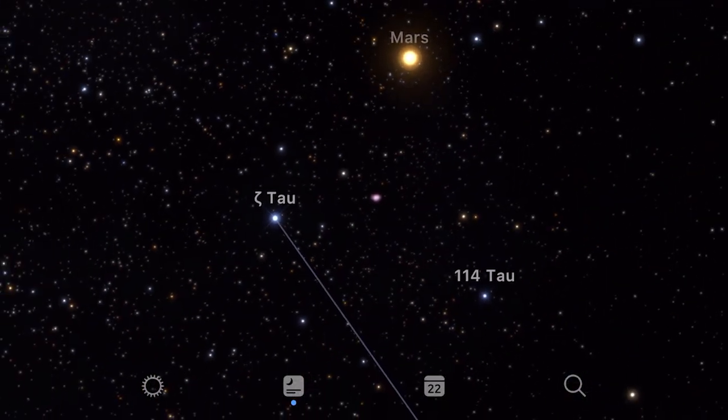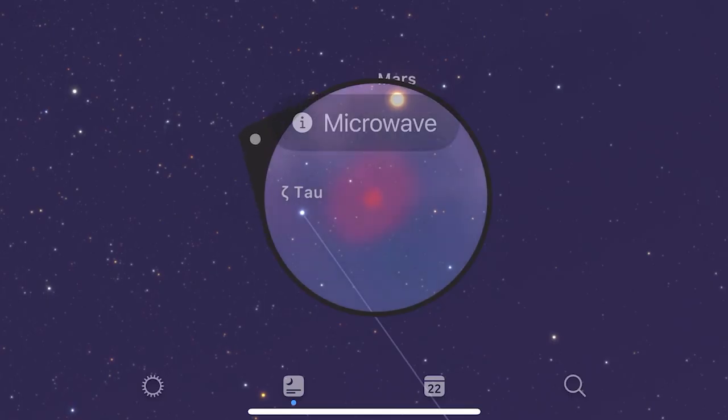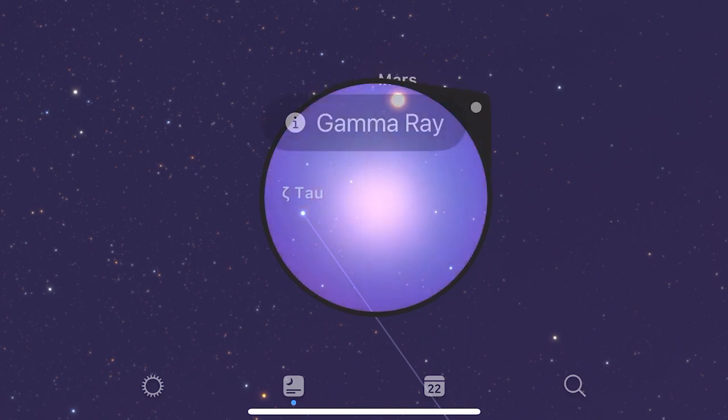The Crab pulsar is also visible all the way from radio waves to gamma rays, and it is one of the brightest gamma ray sources in the sky.